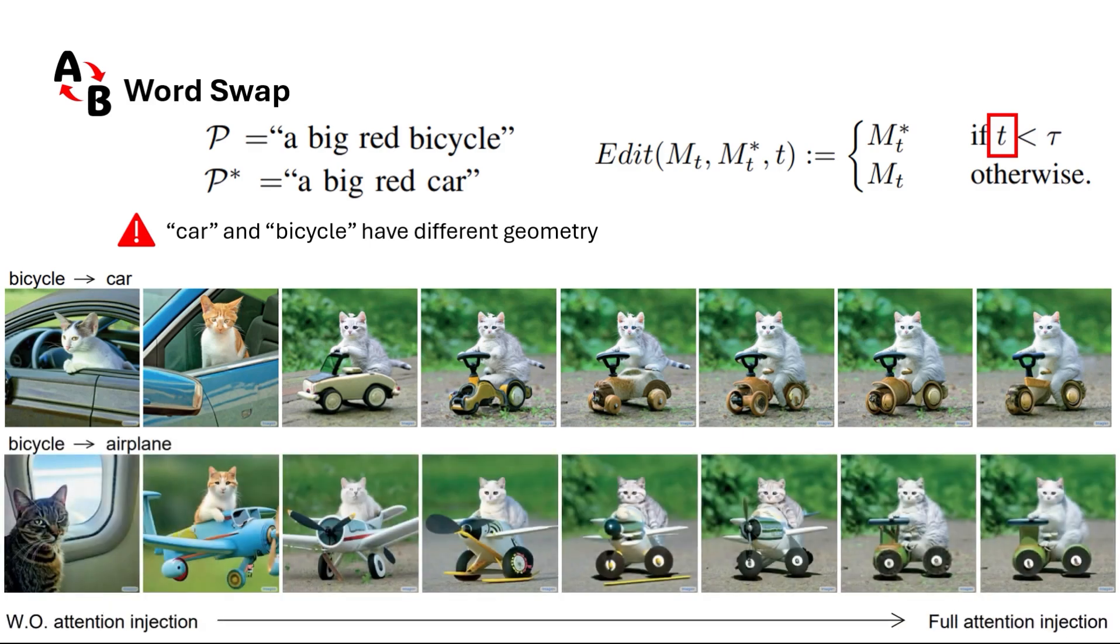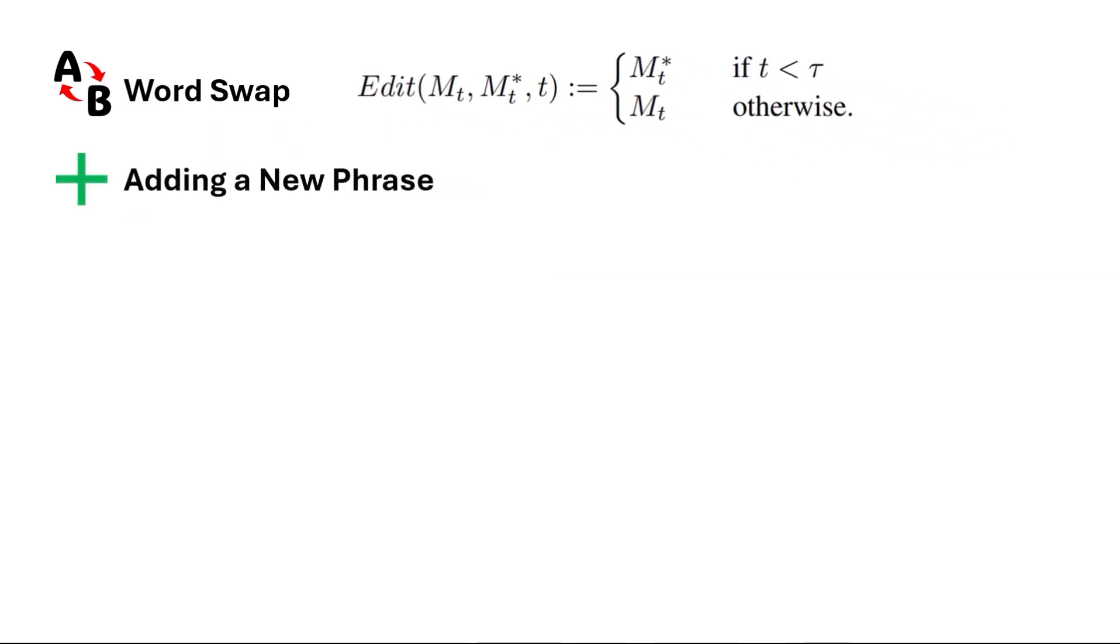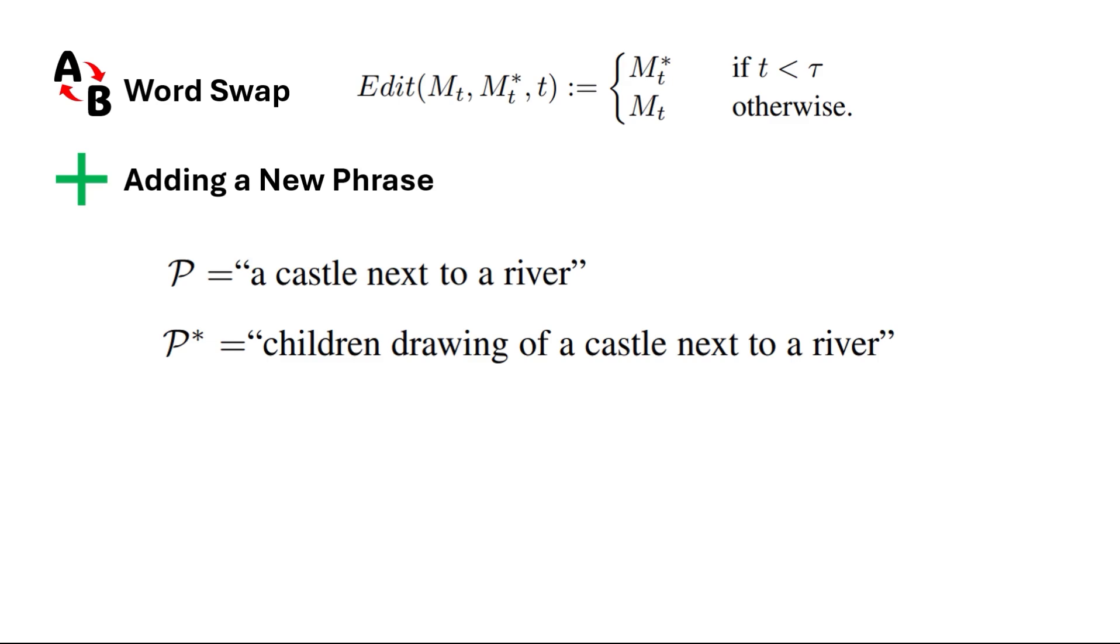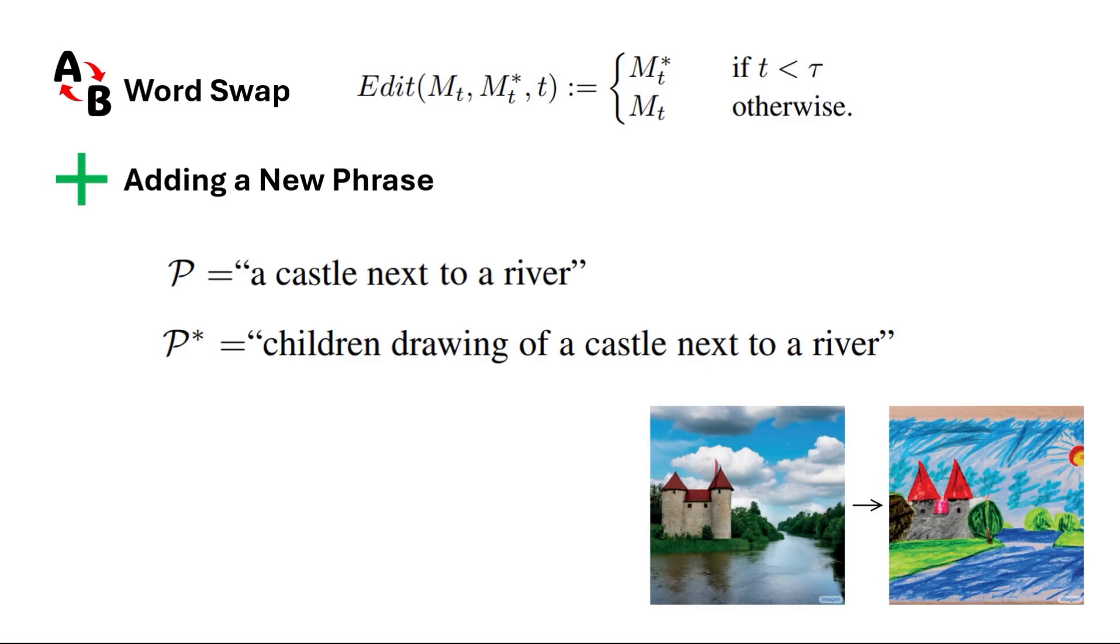You can see a similar trend when we want to swap the word from bicycle to airplane, which is more challenging. Another editing technique is adding a new phrase where you have a prompt such as 'a castle next to a river' and you want to add some characteristics to it like 'children drawing of a castle next to a river.'